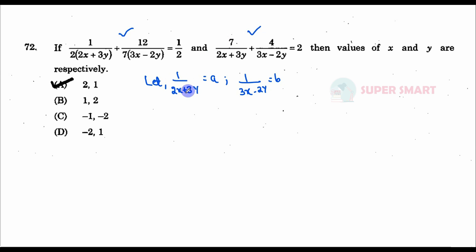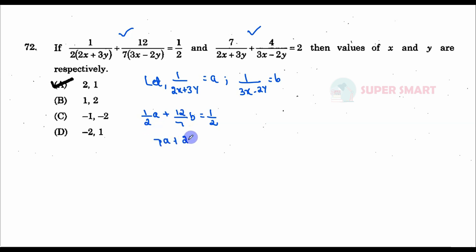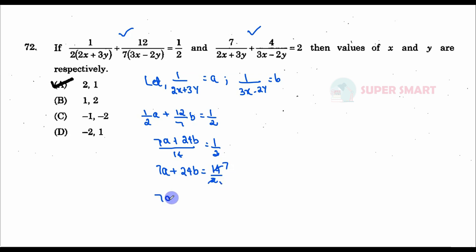So, 1 by (2x + 3y) is equal to a. We get: 1 by 2a plus 12 by 7b is equal to 1 by 2. Working that out: 7a plus 2 into 12 — which is 24b — divided by 7 equals 1 by 2. So, 7a plus 24b is equal to 7.